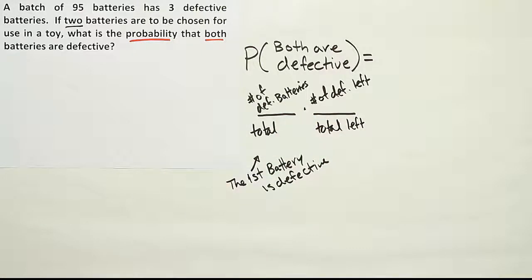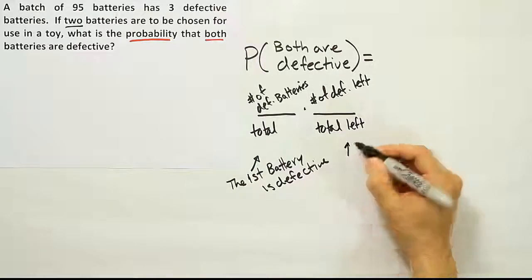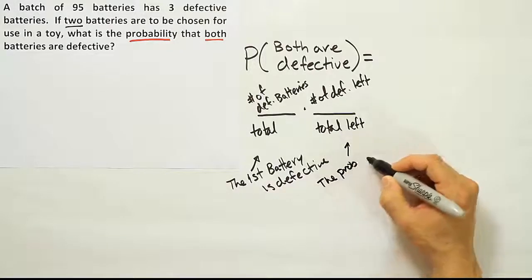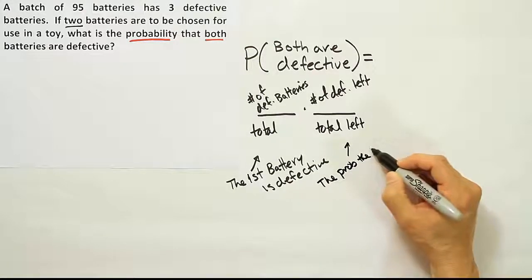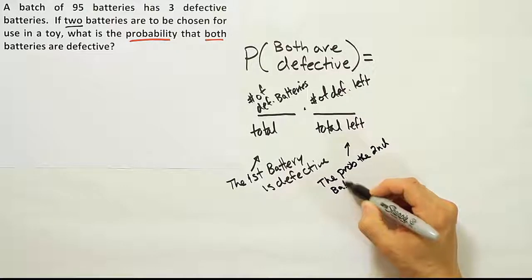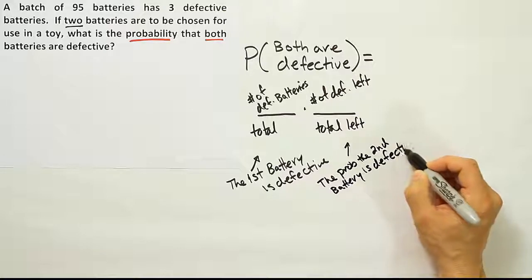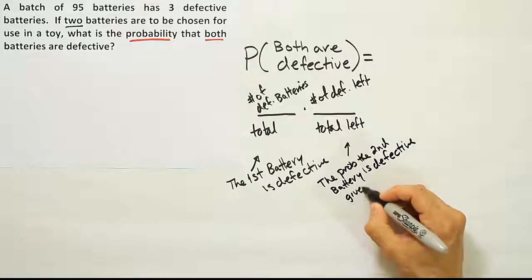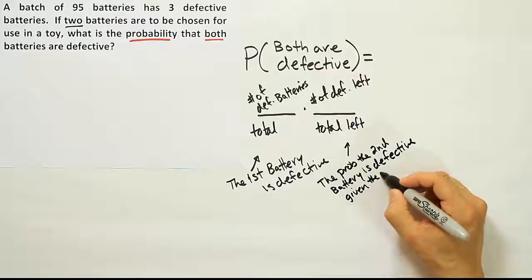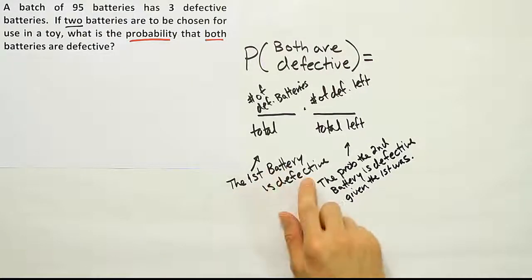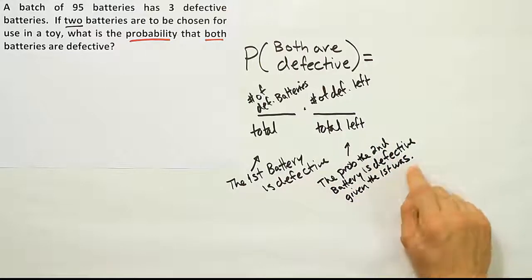So that should clear that up. If you wanted to write this out in words, you would say: the probability the second battery is defective given the first was defective. That's the structure of our fractions.